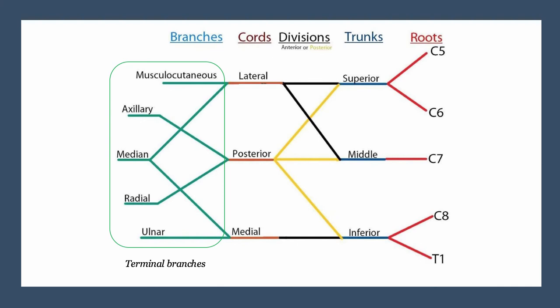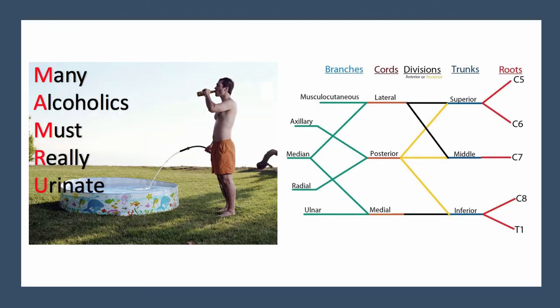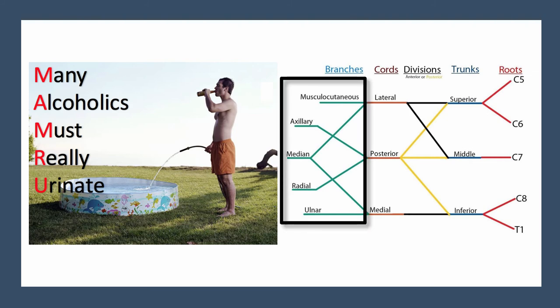Now let's introduce the brachial plexus roadmap that we'll be using throughout this video series to help better contextualize exactly where lesions are occurring and which nerves are affected. We will be investing our time and energy on the terminal branches of the brachial plexus which are shown on the far left of this image. These terminal branches can easily be remembered by the acronym Many Alcoholics Must Really Urinate. M for musculocutaneous, A for axillary, M for median, R for radial, and U for ulnar.